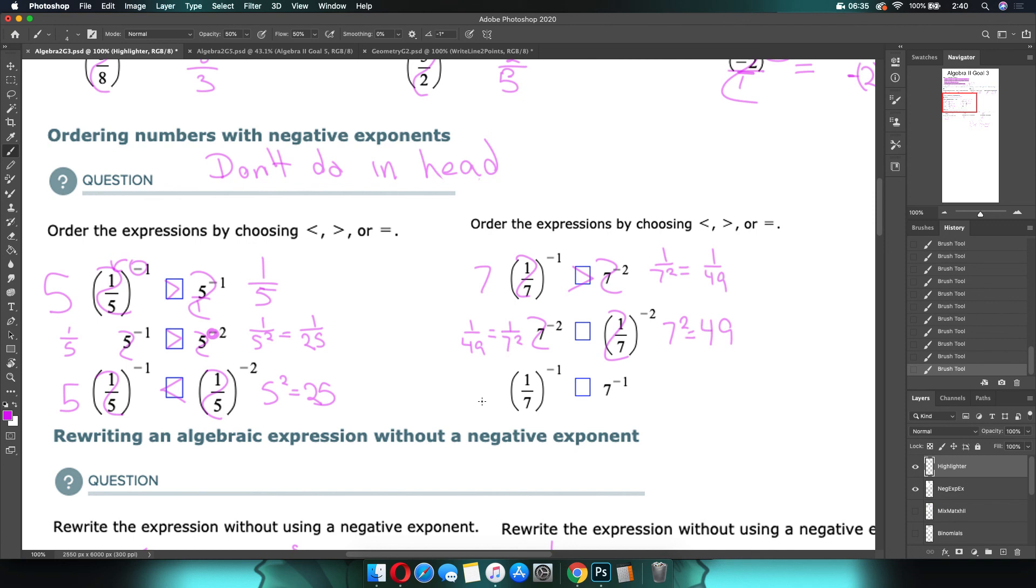Flip this to be 7 squared, which is 49. Which is bigger? 1 49th or 49. The whole number is bigger. Flip this to be a 7. Flip this to be 1 over 7. 7 or 1 7th, which is bigger. The whole number.